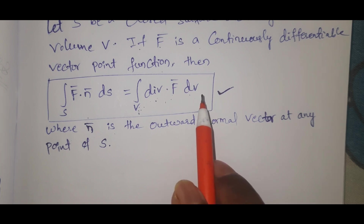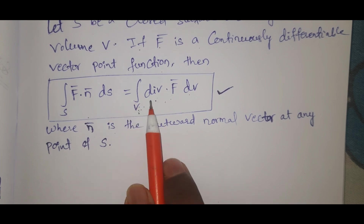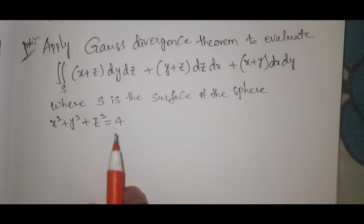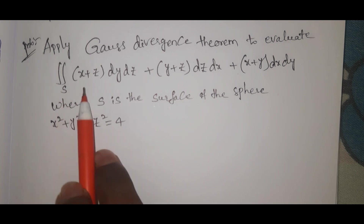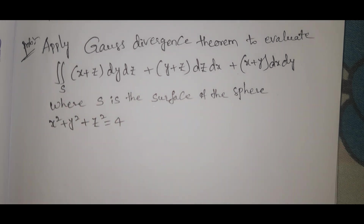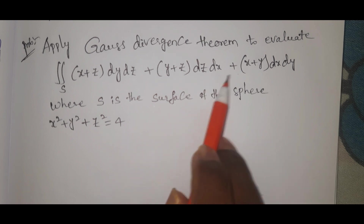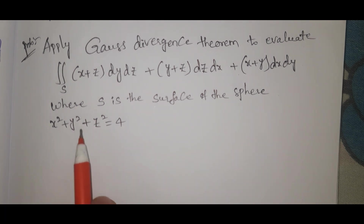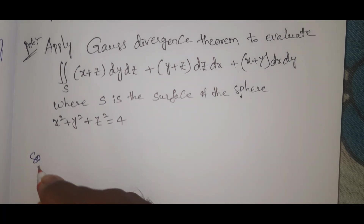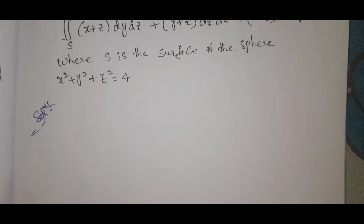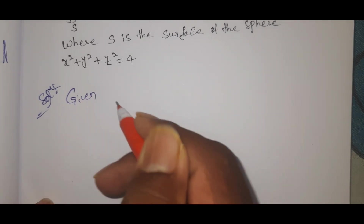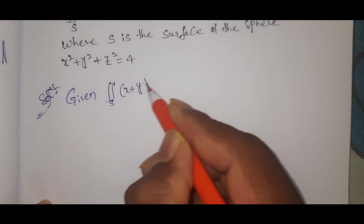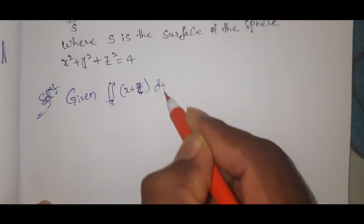Apply Gauss Divergence Theorem to evaluate the double integral over S of: (x plus z) dy dz plus (y plus z) dz dx plus (x plus y) dx dy, where S is the surface of the sphere x squared plus y squared plus z squared equals 4. See the solution here.